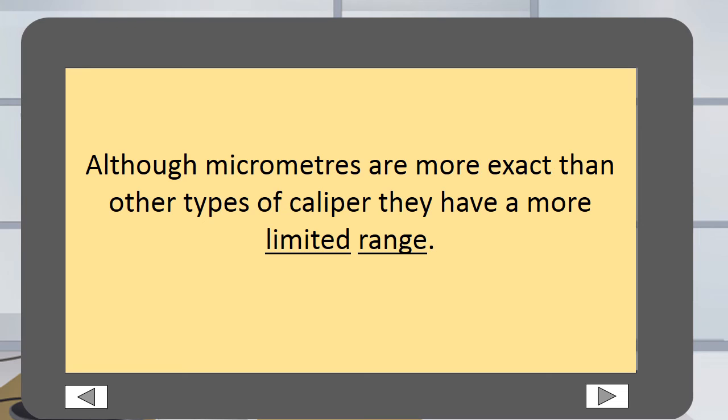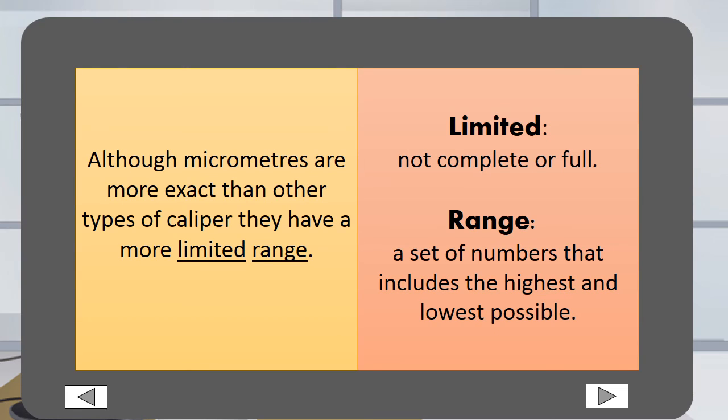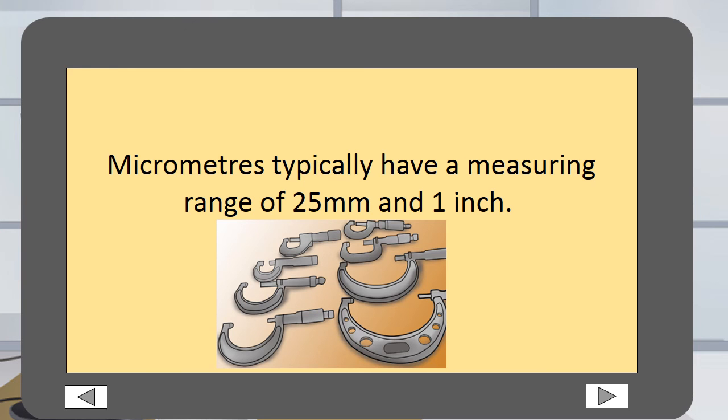Although micrometers are more exact than other types of caliper, they have a more limited range. Limited is when something is not complete or full. Range is a set of numbers that includes the highest and lowest possible. Micrometers typically have a measuring range of 25 millimeters and 1 inch.